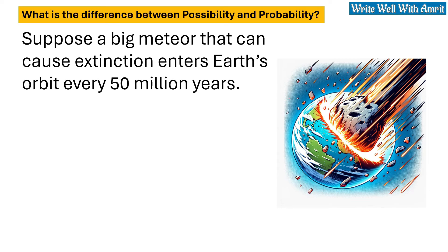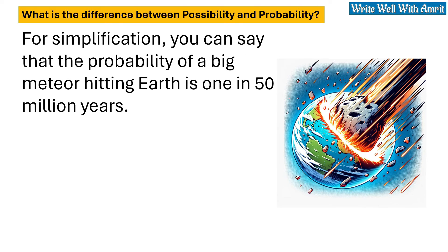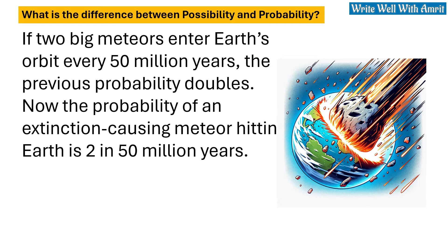Suppose a big meteor that can cause extinction enters Earth's orbit every 50 million years. For simplification, you can say that the probability of a big meteor hitting Earth is 1 in 50 million years. If 2 big meteors enter Earth's orbit every 50 million years, the previous probability doubles.